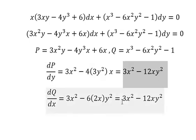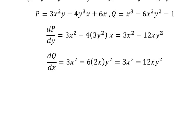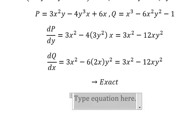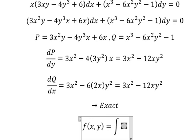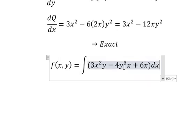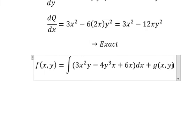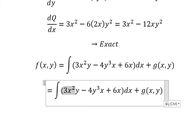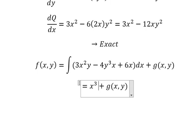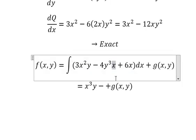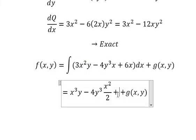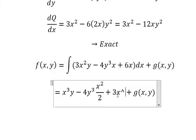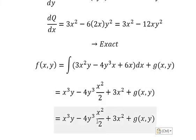We can see that this one is equal to this one, so this is an exact equation. Now we need to set up the function F(x,y). F(x,y) equals the integral — I will select this one — plus g(x,y). The integral of 3x squared gives us x to the power of 3 times y. This one gives us x squared over 2. So we have x squared over 2, and 4 divided by 2 gives us 2.